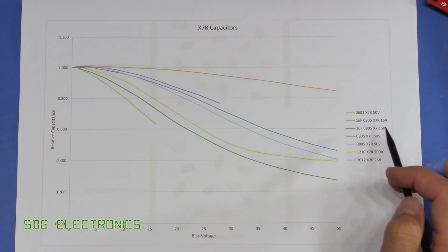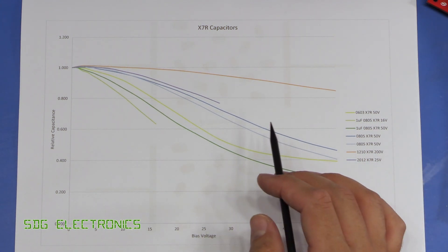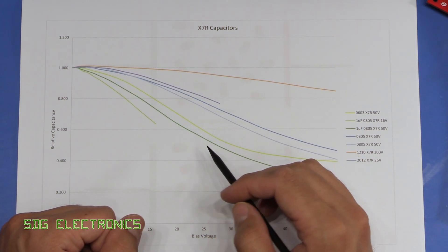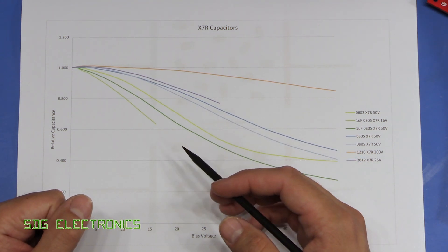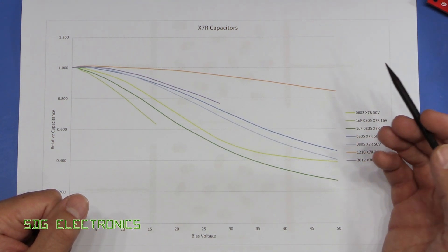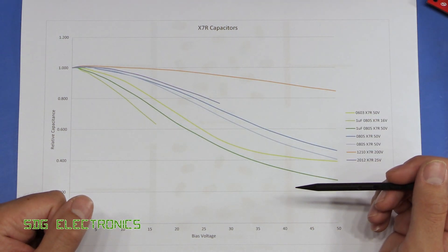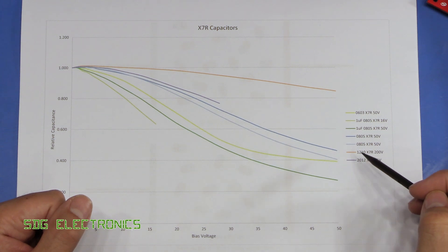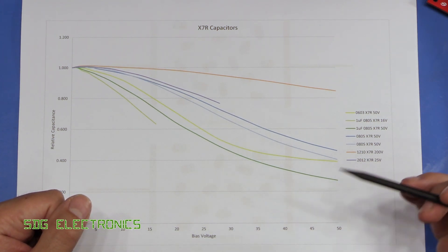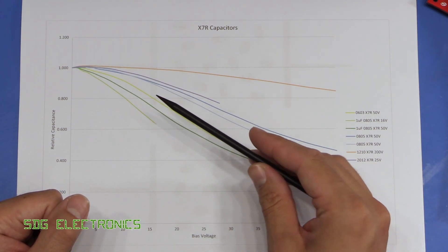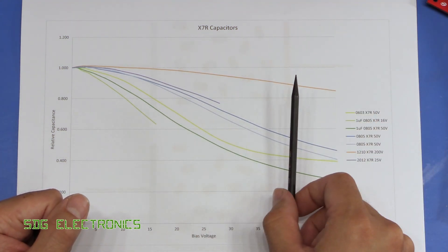The next is that you should consider looking at using a higher voltage capacitor where possible. So even if your circuit's operating at 25 volts, it may make more sense to use a 200 volt capacitor just because it may get you further up the curve. And then finally, potentially the less desirable is that a physically larger capacitor will hold its value higher at a higher bias voltage.